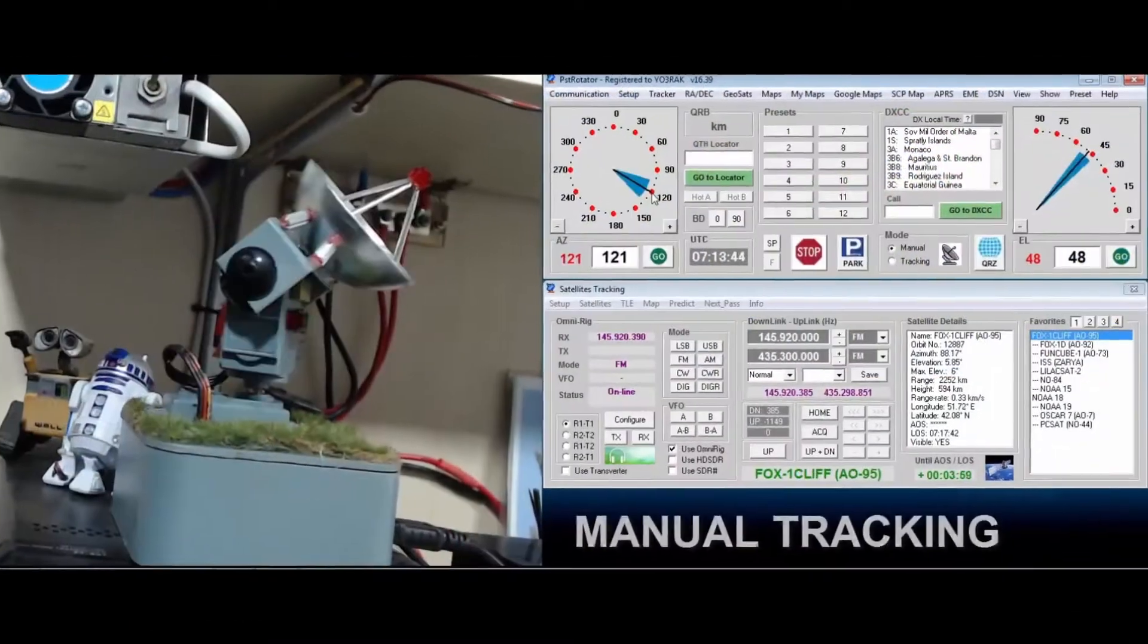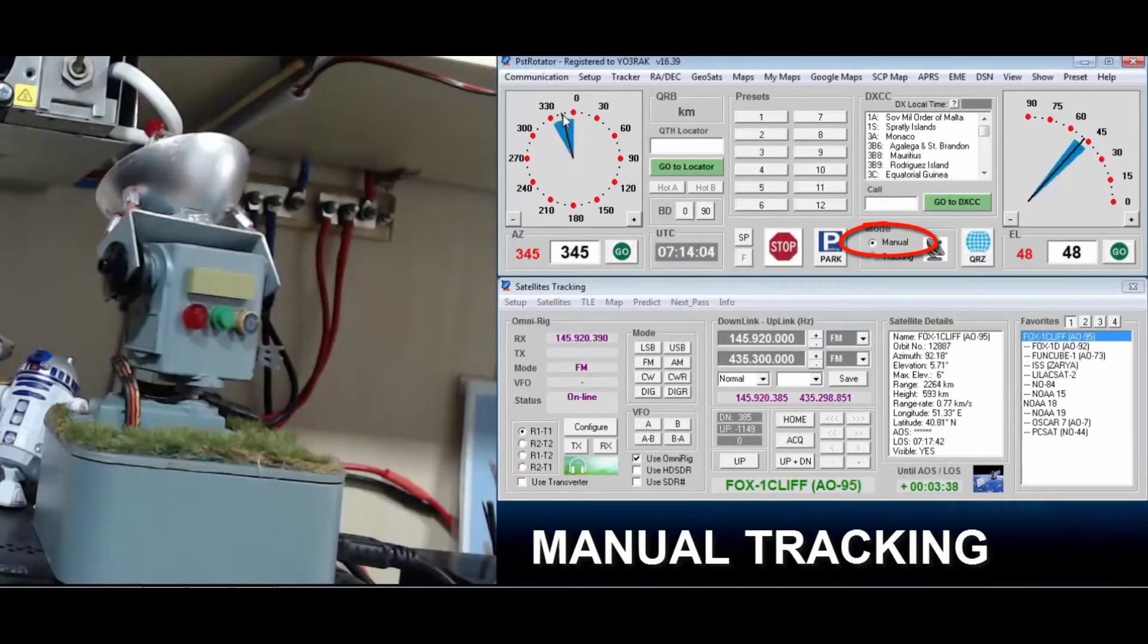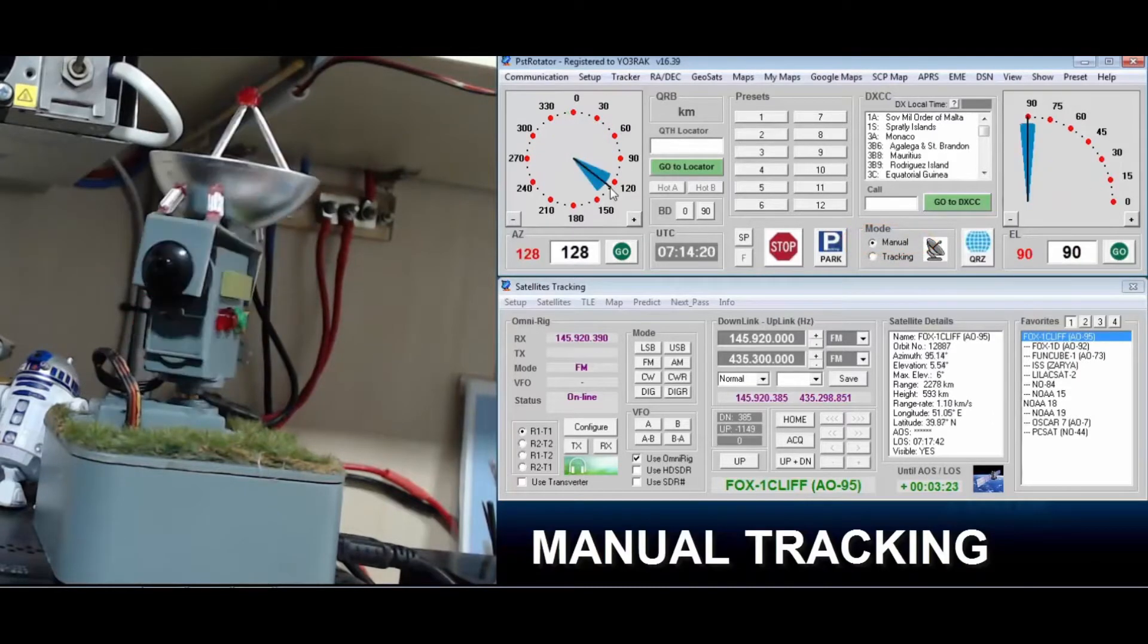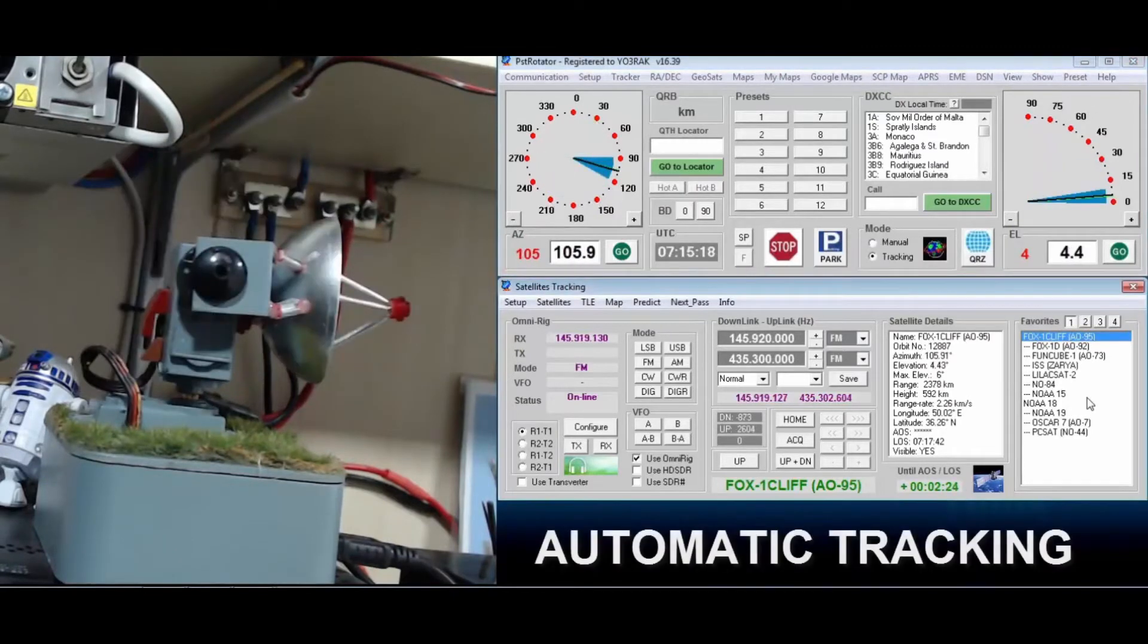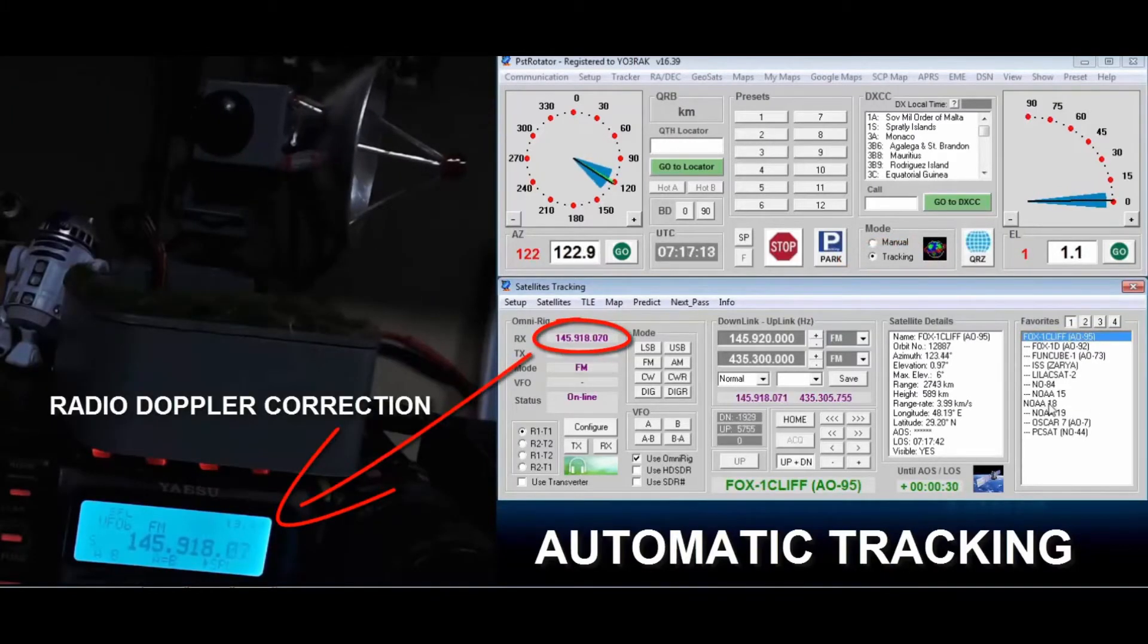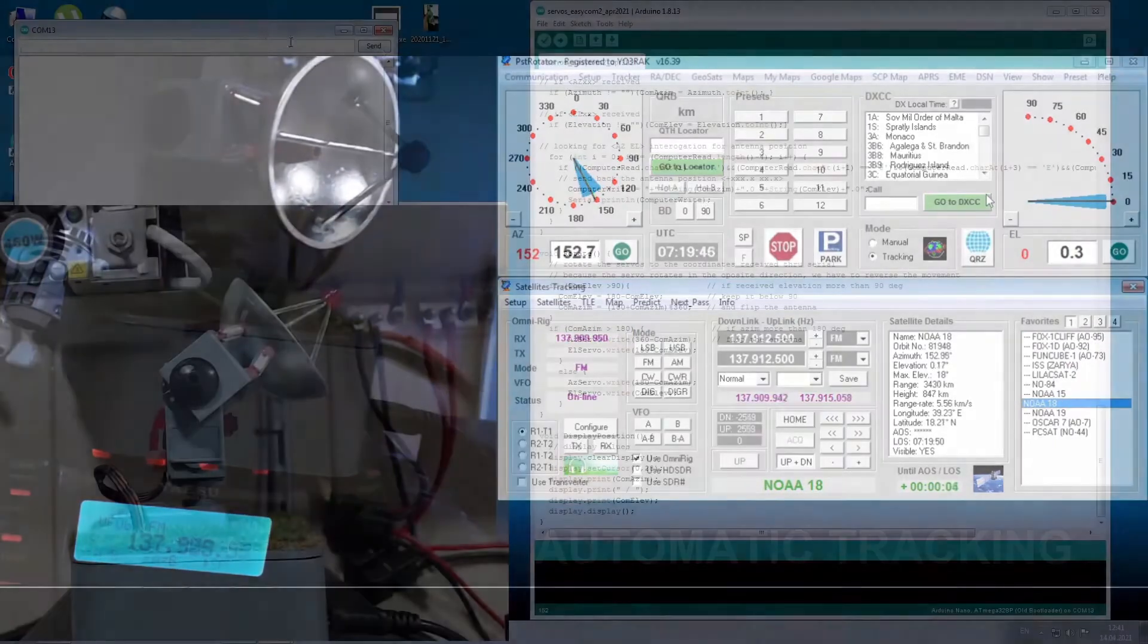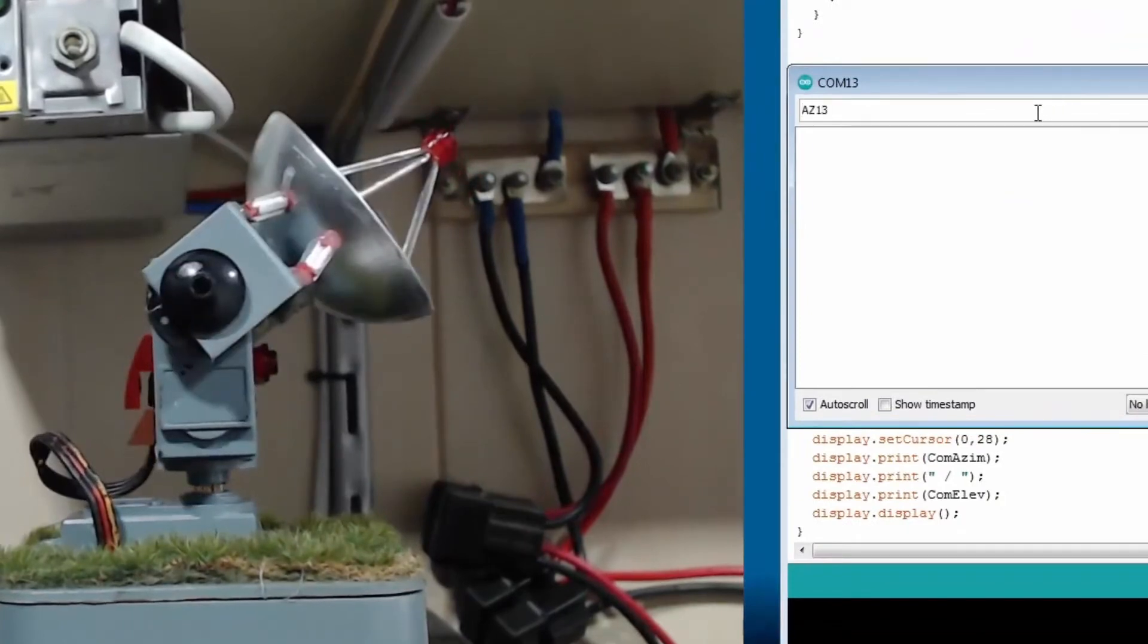PST Rotator can manually point the antenna in the desired direction, or also track satellites and control your radio. Or you can simply send the azimuth and elevation to the serial using a serial terminal software.